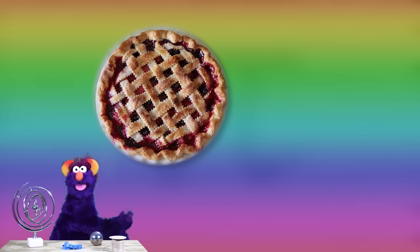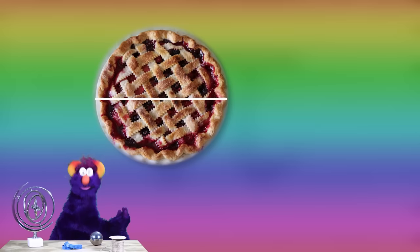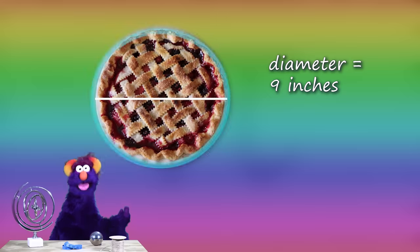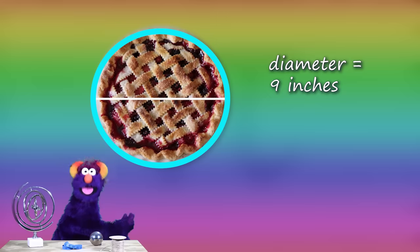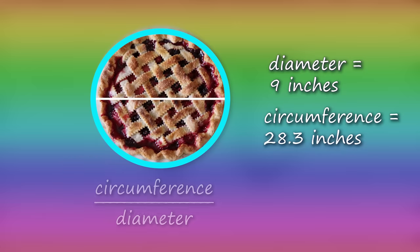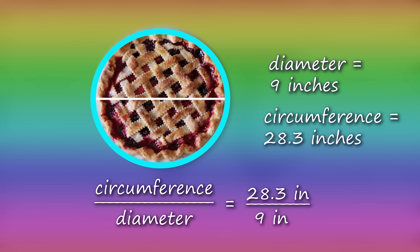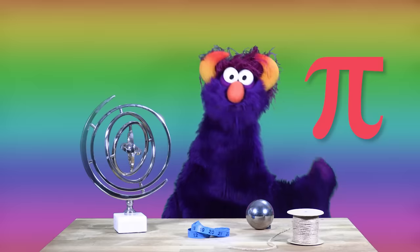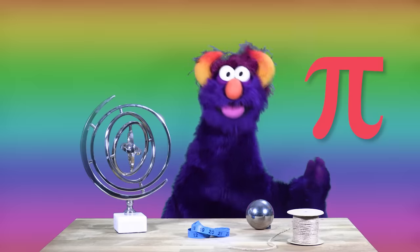Let's try it for this cherry pie. What's the diameter of this cherry pie? Nine inches. What's the circumference of this cherry pie? 28.3 inches. Divide the circumference of the cherry pie by the diameter of the cherry pie. What do you get? 3.14. Pi — cherry pie pi!